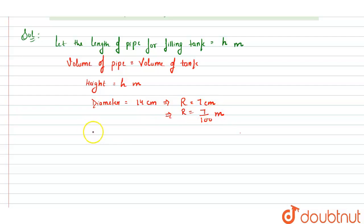Now volume of pipe equals pi R square H, that means 22 by 7 into 7 by 100 square into H.